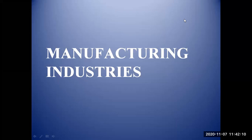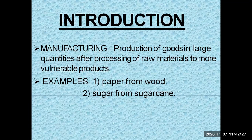Good morning, dear students. Our today's topic is manufacturing industries. Production of goods in large quantities after processing from raw materials to more valuable products is called manufacturing. That means processes where we are converting raw material into usable, profitable finished goods — this process is known as manufacturing, and this whole sector is known as manufacturing industries. In this chapter, we will learn about manufacturing industries, their importance, and how they are important for the economy.